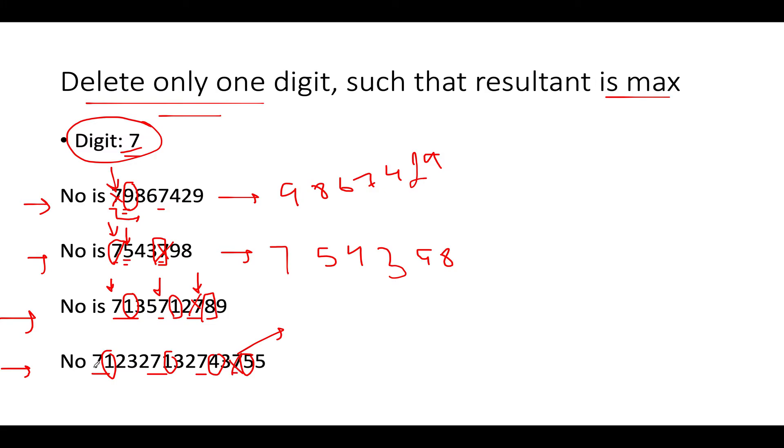So the answer becomes 7123271327435 5 — essentially the string with the last occurrence of 7 removed.